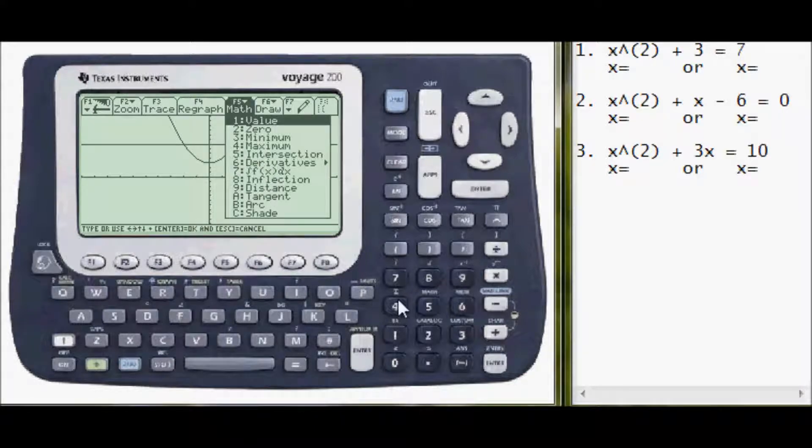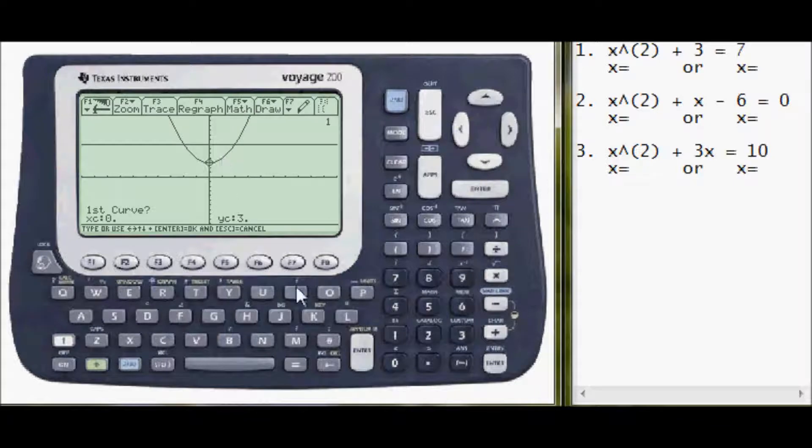Now once this is done, press F5 and intersect is number 5. First curve, second curve, it doesn't matter which border. Just make sure you get two different curves. Lower bound will be on the left. Now I need to get on the right of this intersect. So I'll just estimate. One, two, three, four. And it turns out they intersect at x equals 2. So I'll put that here, x equals 2.